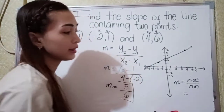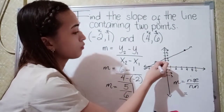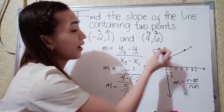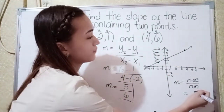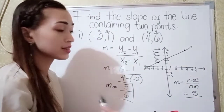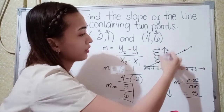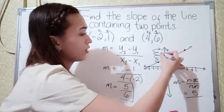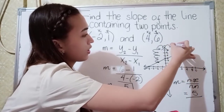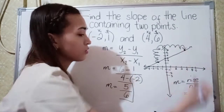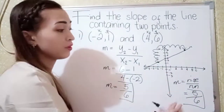Let's try. What is our rise? From this point, let's count units up to this one: 1, 2, 3, 4, 5 — so 5 units upward. Next, how many units from here to here for the run? Let's count: 1, 2, 3, 4, 5, 6 — so we have 6. The answer is the same: 5 over 6. So our slope with the graph is 5 over 6, and with the formula we also have 5 over 6.